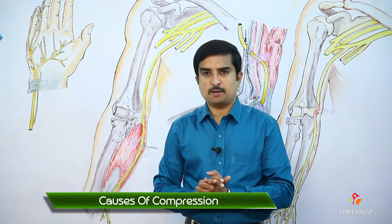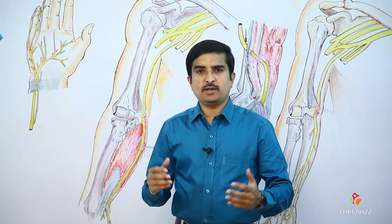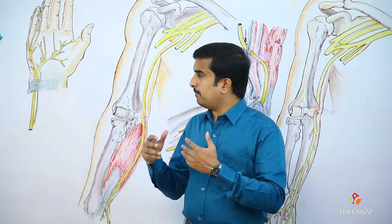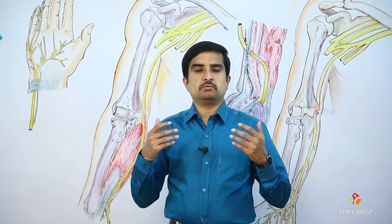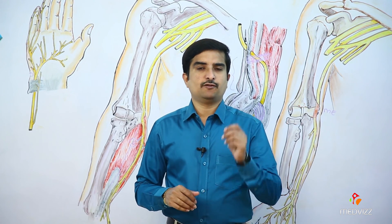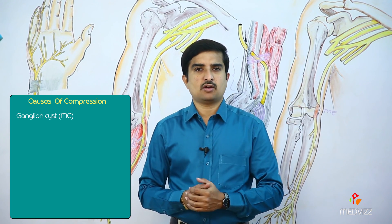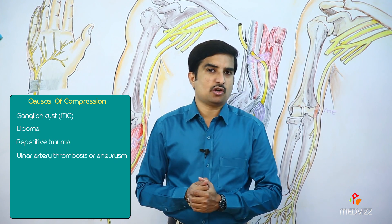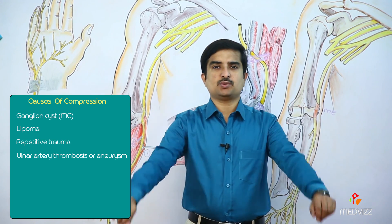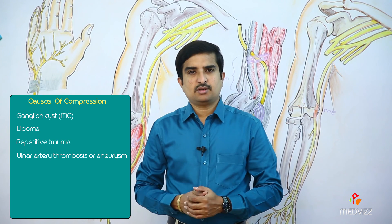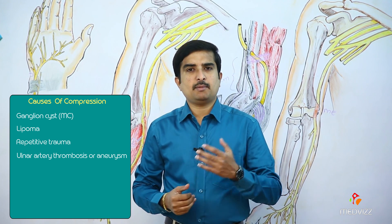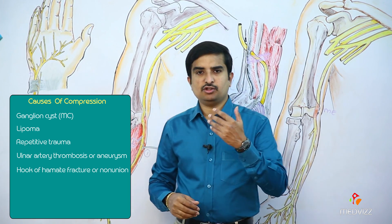There are many causes for compression: lipoma, repetitive trauma, ulnar artery thrombosis or aneurysm, and fracture of the hook of hamate. One of the most common causes — in 80% of cases — is the formation of a ganglion cyst. Ganglion cyst formation is the most common cause of Guyon's Canal neuropathy. Ulnar artery thrombosis or aneurysm mainly causes injury to the sensory or deep branches, resulting in Zone 1 or Zone 2 type of injury. Fracture of the hook of hamate mainly causes injury to the deep branch of the ulnar nerve.